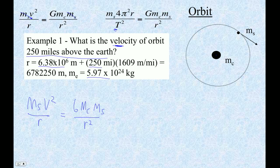So 6.38 times 10 to the sixth meters plus 250 miles - that's the conversion meters per mile. So if you run four laps on the track, you're nine meters short, actually, of a mile. And then this is what it is: 6.782250 meters.